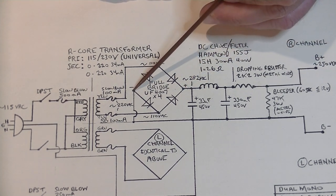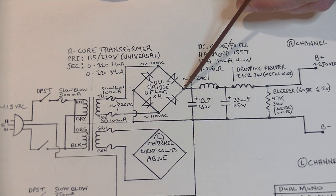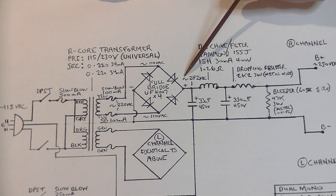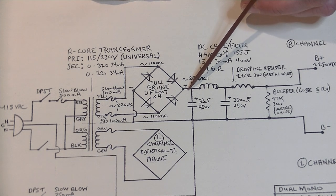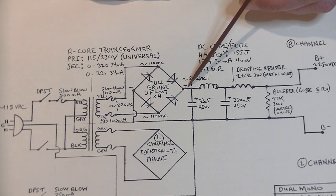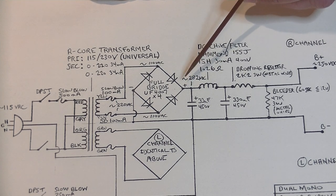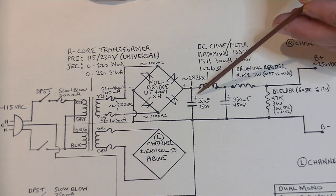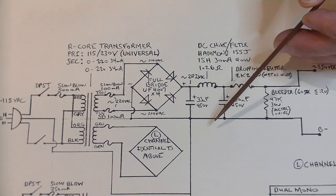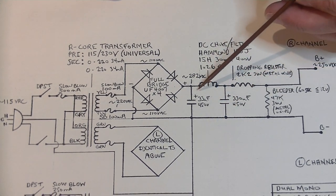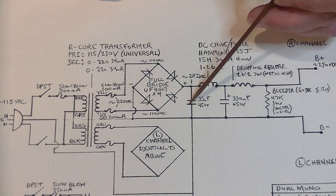Okay. So off of this leg, we go straight to ground. And off the forward leg of the bridge, we have positive. We have approximately 282 volts DC. And that's raw DC. Now we need to smooth that out because we want our B plus nice and clean for our audio circuit. And we do that with a bunch of filters.